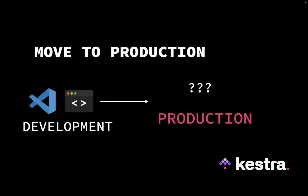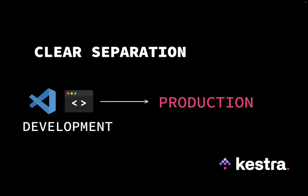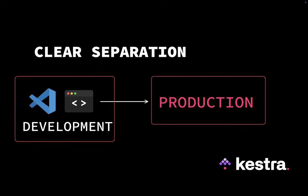But how do you move that project to production? How can you ensure that your change or new project won't affect anything else? The production environment should remain stable and secure. It's considered best practice to have a clear separation between development and production workflows. You may have two entirely separate instances, servers or clusters for development and production environments.